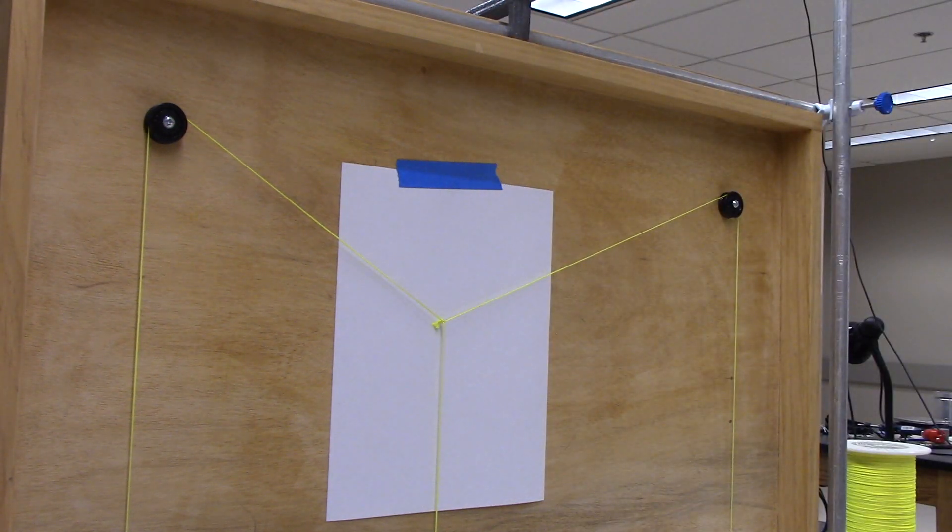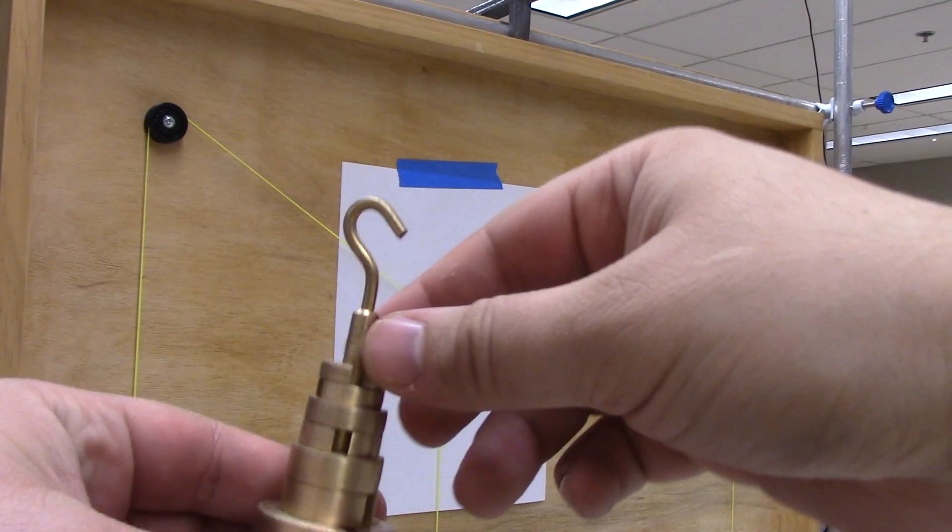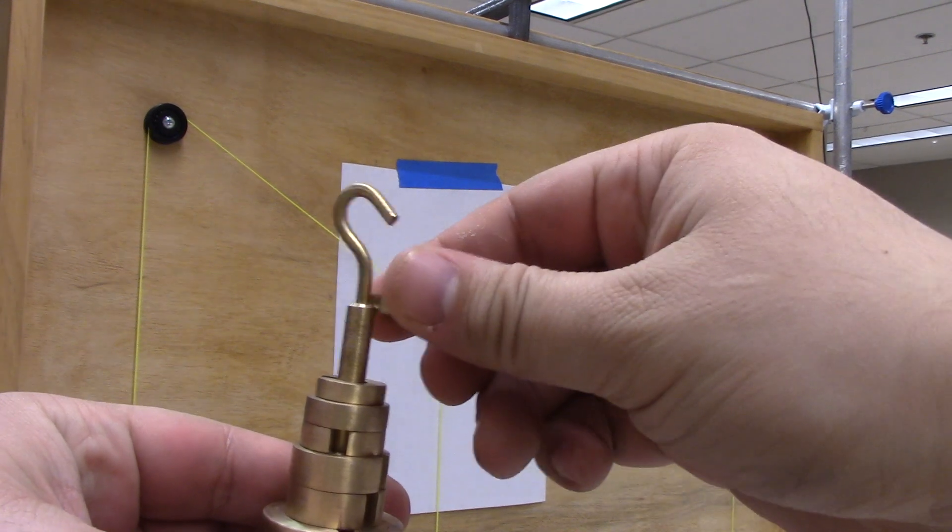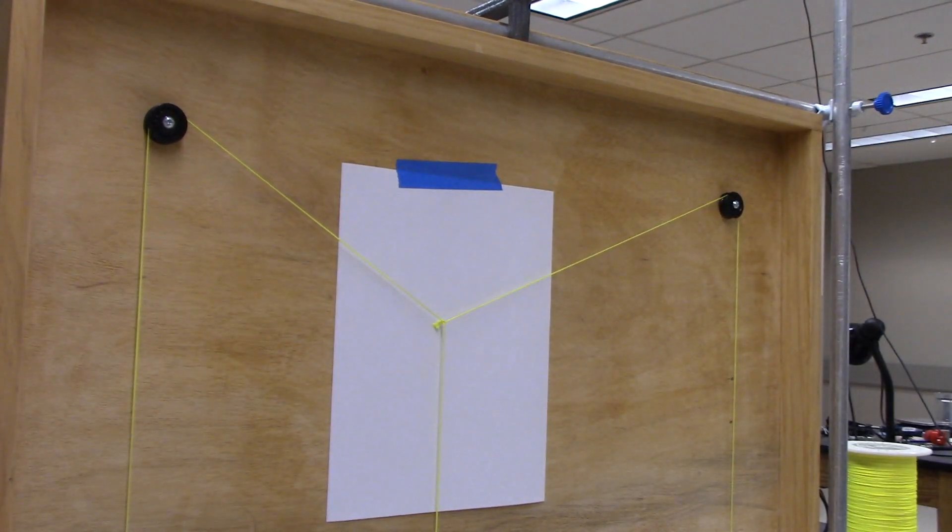They have little disks on them that are removable, so you can change your masses by denominations of disks. You want to set up three different masses so you get an interesting geometry. You don't want everything to be the same, that would be too easy for all of us.